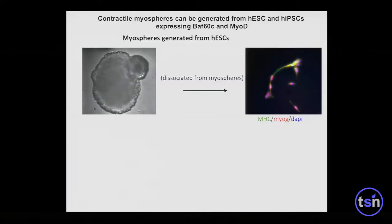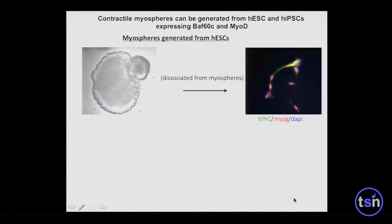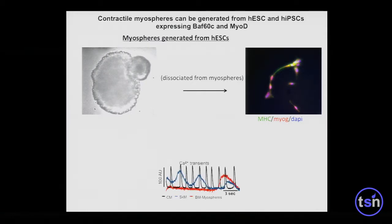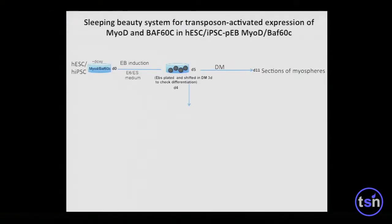These 3D structures were not only formed by myofibers, but were also provided with the ability to contract. The contraction type clearly discriminated these myospheres from typical calcium transients of cardiomyocytes, and dissociation confirmed they were skeletal muscles rather than cardiac muscle cells. So this was a protocol for the formation of three-dimensional skeletal muscles from human embryonic stem cells — though it wasn't yet sufficient for disease modeling, and we needed to move into iPS cells.